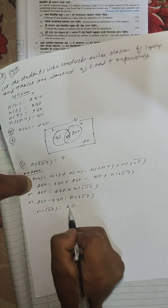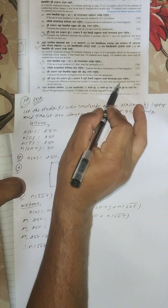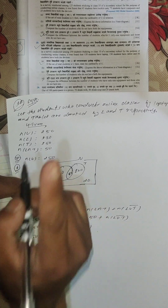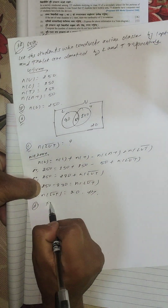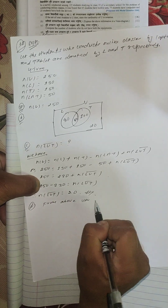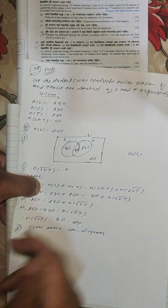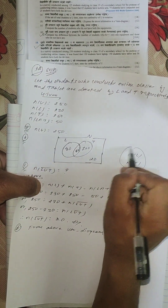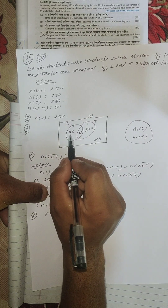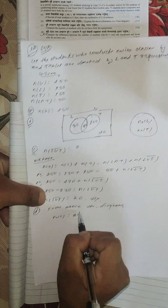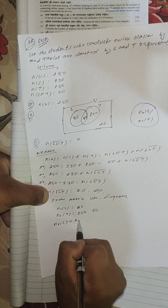The difference between the number of students who have only one equipment and those who don't have any equipment. From the Venn diagram: n of only L equals 80, and n of only T equals 80. So n of only L plus n of only T equals 160.